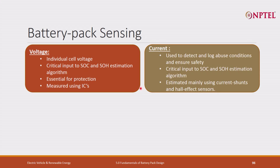The next parameter we have is current. Current is also an important parameter to measure SOC and SOH both. It is also used to detect and log abuse conditions — for example, if you are trying to draw current beyond the functional limit of the battery pack, or because of some reason such as a short circuit, if excess current is being drawn, the BMS will try to isolate or shut off the battery pack. Current keeps critical input to SOC and SOH.